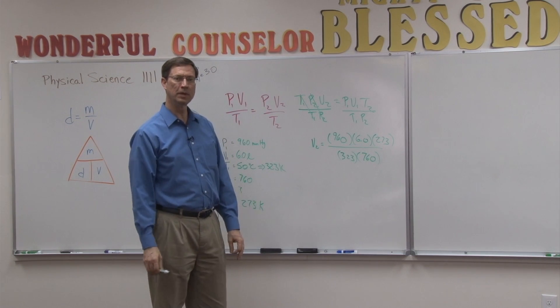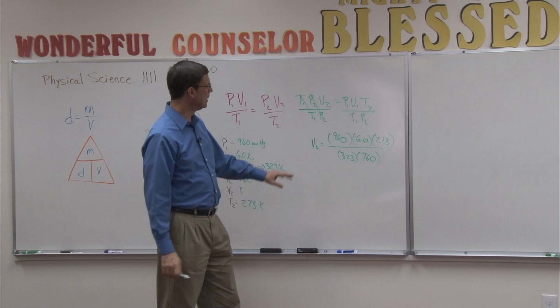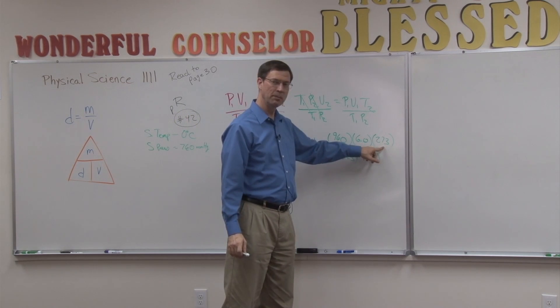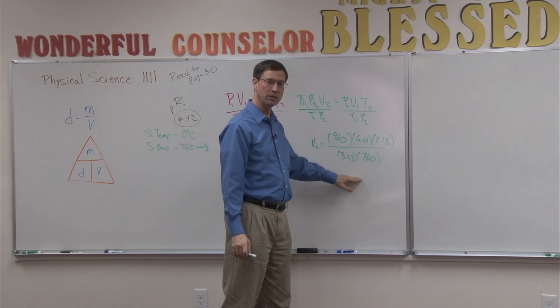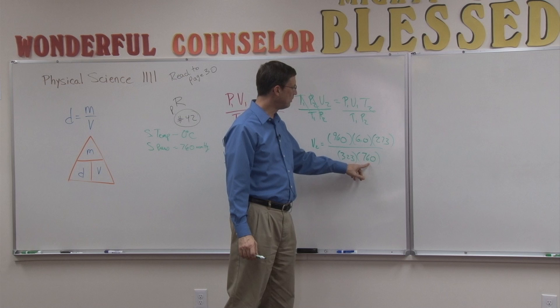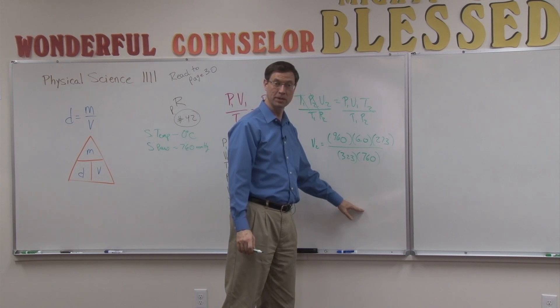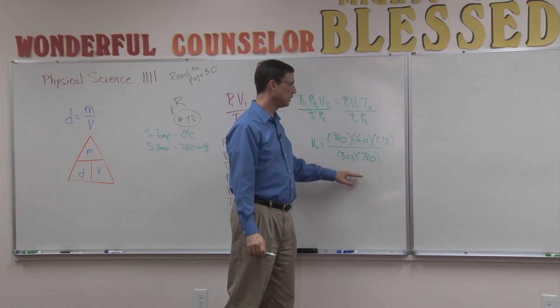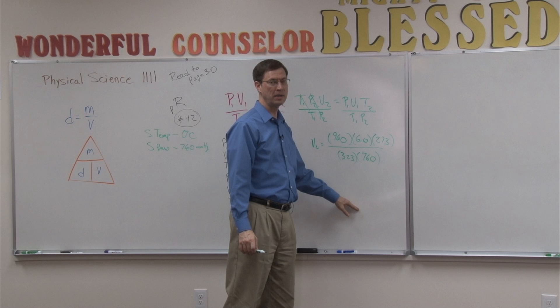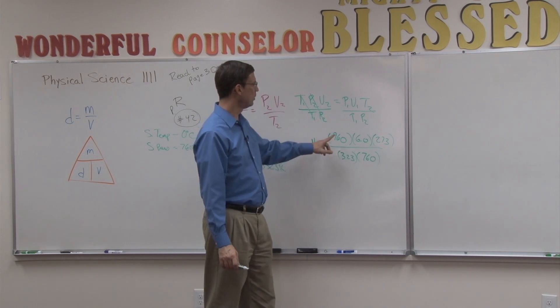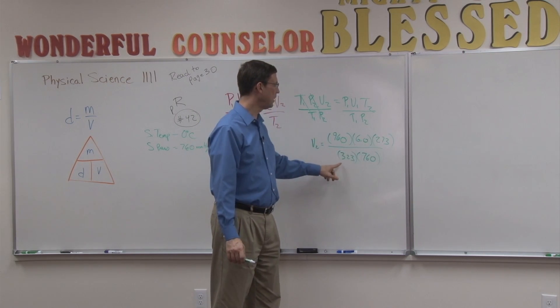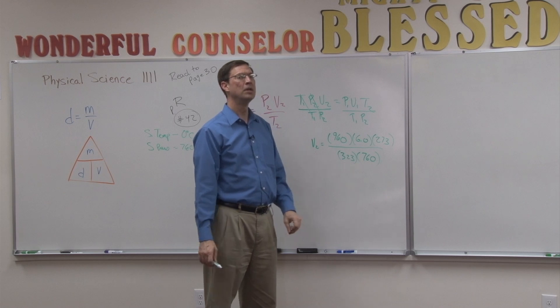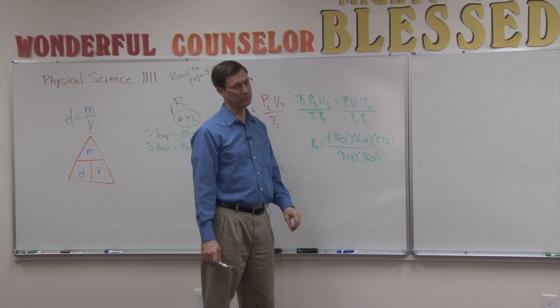And remember the little tip in the previous little lesson is multiply these three numbers together, write that number down. Multiply these two numbers together, put that underneath it. And then take your calculator and take the top number and divide by the bottom number. All right? If you just try to go this times this times this, divided by this, times this, your calculator is going to give you the wrong answer.